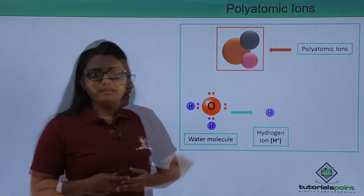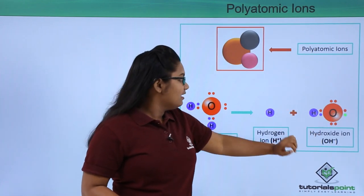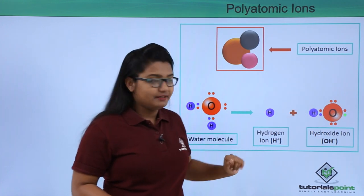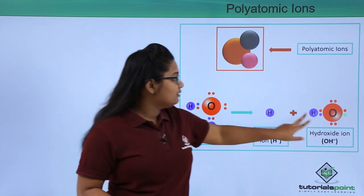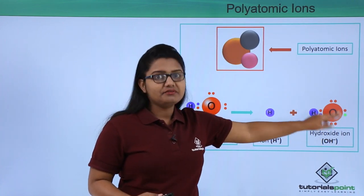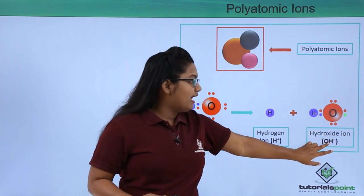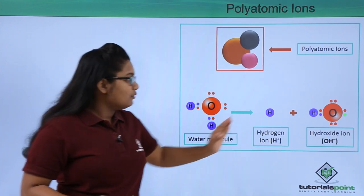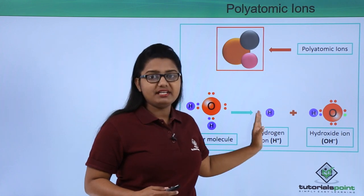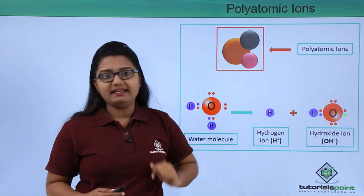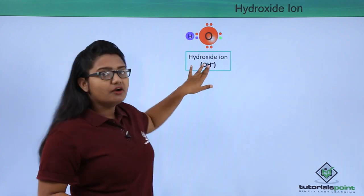Since the hydrogen atom has lost one electron, it becomes positively charged — the hydrogen ion, H+. The second ion formed when the water molecule dissociates is a negative ion. This ion is not made up of only one atom; it is made up of two atoms — one atom of hydrogen and one atom of oxygen — and is named the hydroxide ion, denoted as OH⁻. It is negatively charged because it gained the electron lost by the hydrogen atom.